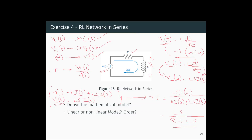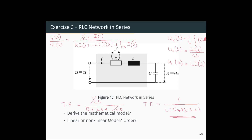V_L(s) is the output, equal to L·s·I(s). The transfer function is the Laplace of the output divided by the Laplace of the input: L·s·I(s) divided by R·I(s) + L·s·I(s). Cancelling I(s) from numerator and denominator, we get L·s divided by R + L·s. This is the transfer function of the RL network.